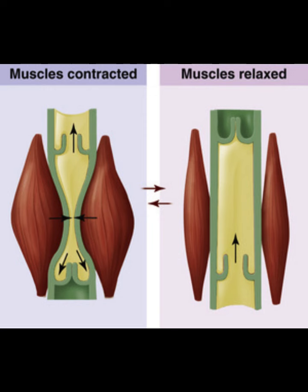How does lymph move throughout the body? Unlike blood, there is no heart assisting fluid movement. Lymph moves through pressure from both internal and external forces. Internal pressure comes from smooth muscle units within the lymphatic vessel walls called lymphangions, which contract to move lymph from one section to the next, similar to peristalsis in the digestive system.